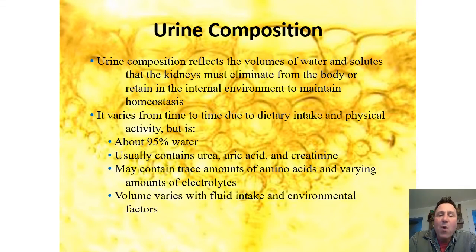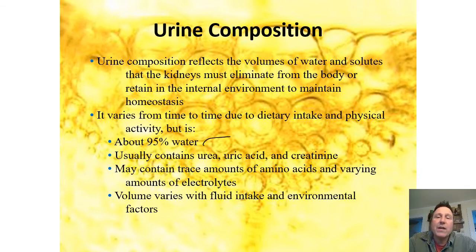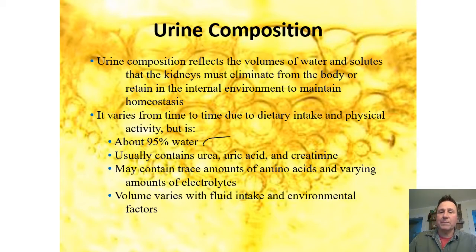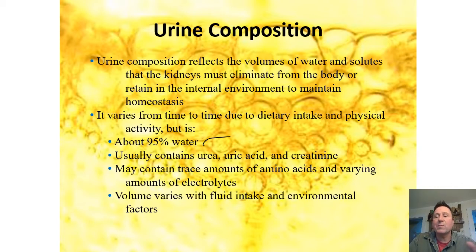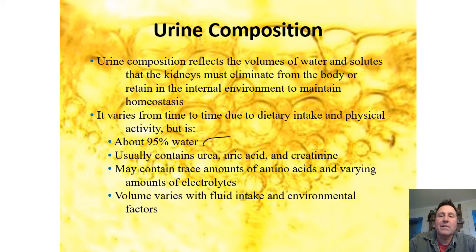Urine is mostly water — 95% water. It depends on hydration: it's more concentrated if you're dehydrated, or more watery if you're overhydrated. It mirrors your plasma. That's why you can take a blood level to look at drugs or normal constituents in your body, and you can also look at urine. There are some differences between plasma and urine because of filtration and selective reabsorption, but you can look at either urine or blood to get clues about your health.